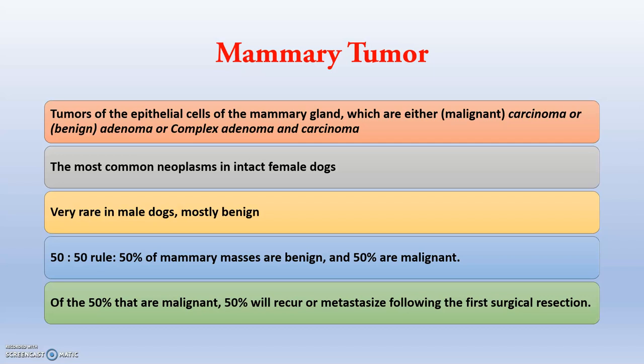These are tumors of the epithelial cells of the mammary glands, either malignant (carcinoma) or benign (adenoma), or complex adenoma and carcinoma present simultaneously. It is the most common neoplasm in intact female dogs and very rare in male dogs — if it occurs in males, it is mostly benign. The 50-50% rule states that 50% of mammary masses are benign and 50% are malignant, and of those malignant cases, 50% will have a metastatic chance following the first surgical resection.